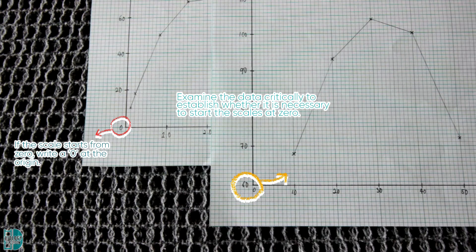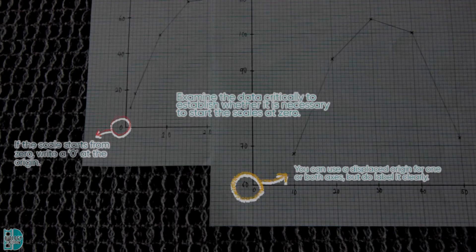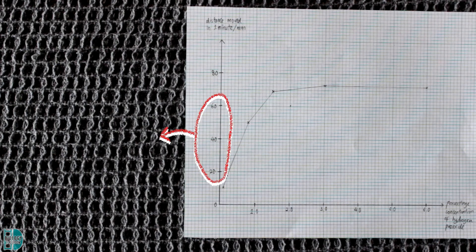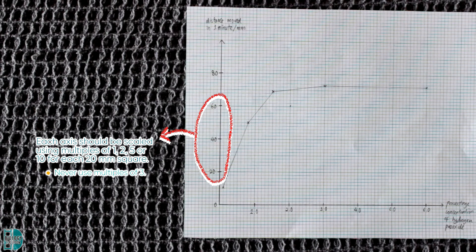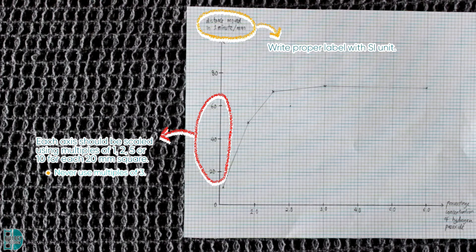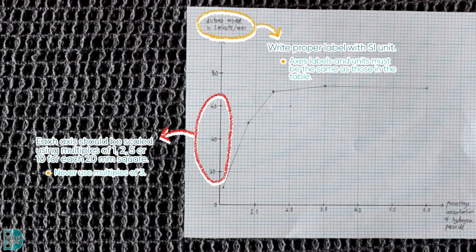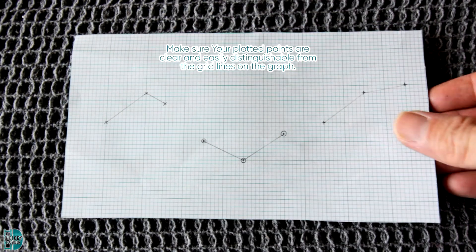If not, you can use a displaced origin for one or both axes, but this must be made obvious by labelling it very clearly. Each axis should be scaled using multiples of 1, 2, 5, or 10 for each 20 mm square on the grid — this makes it easy to plot and extract data. Never use multiples of 3. Each axis should be labelled clearly with the quantity and SI units or derived units as appropriate, and the axis labels and units must be the same as those in the table.